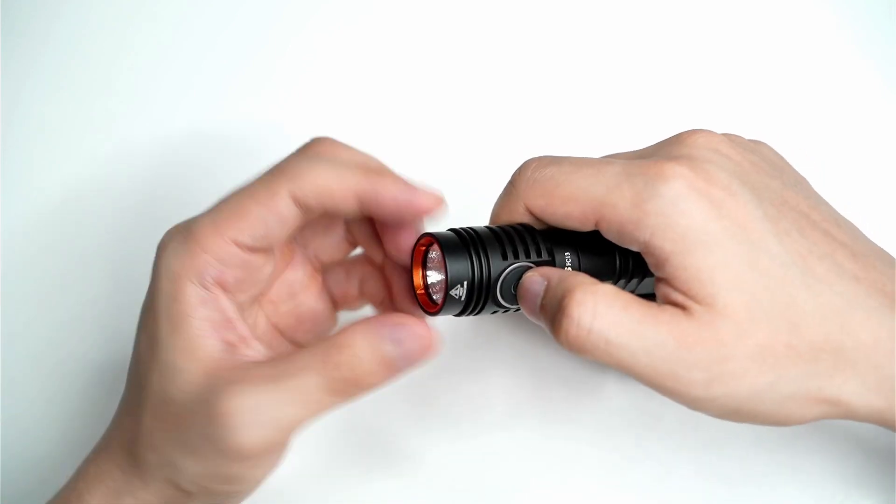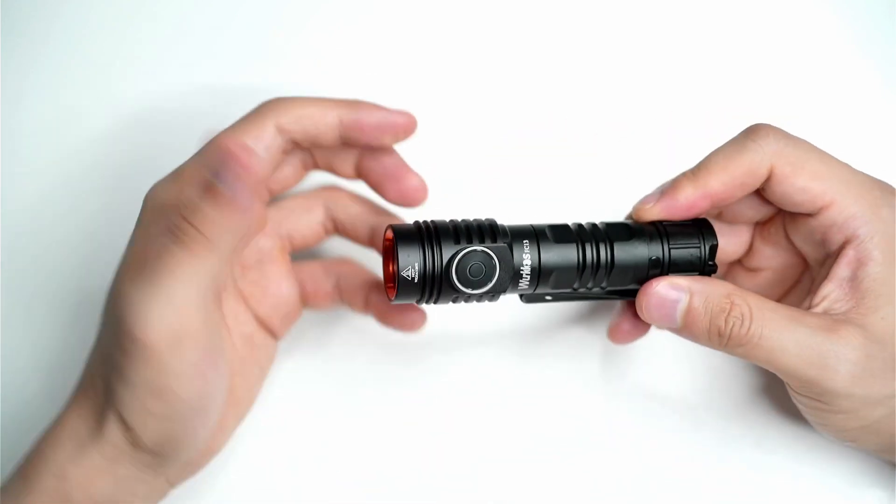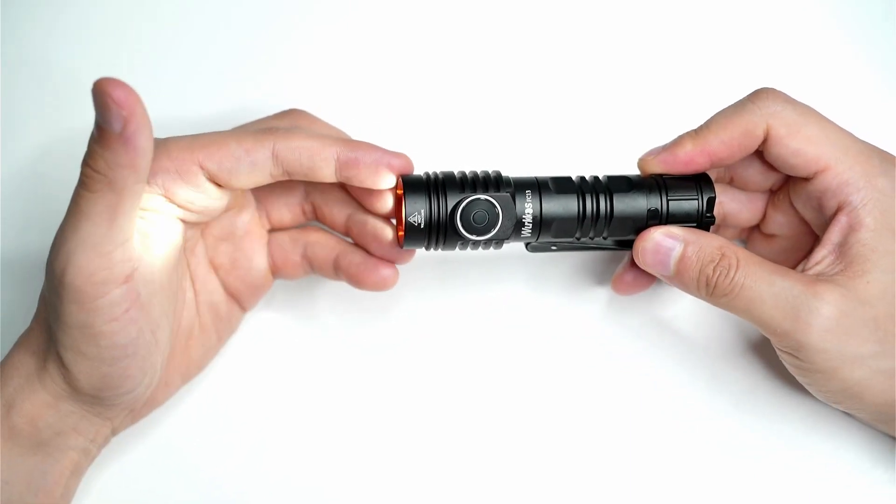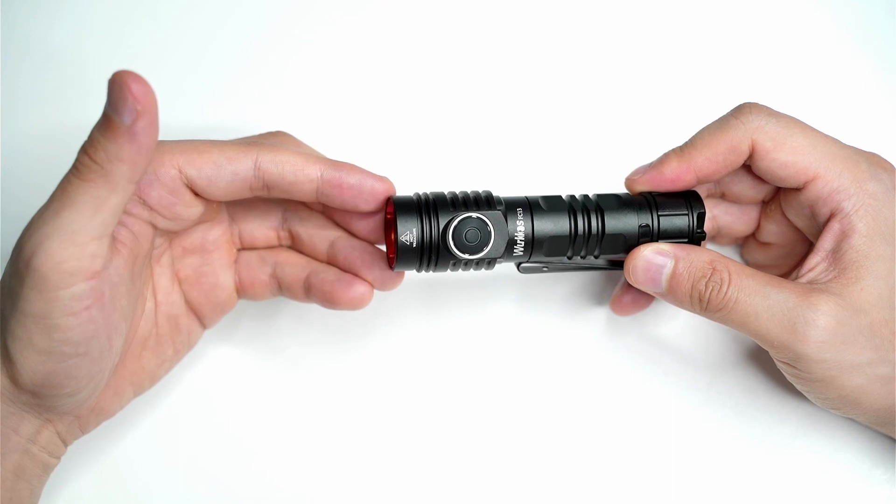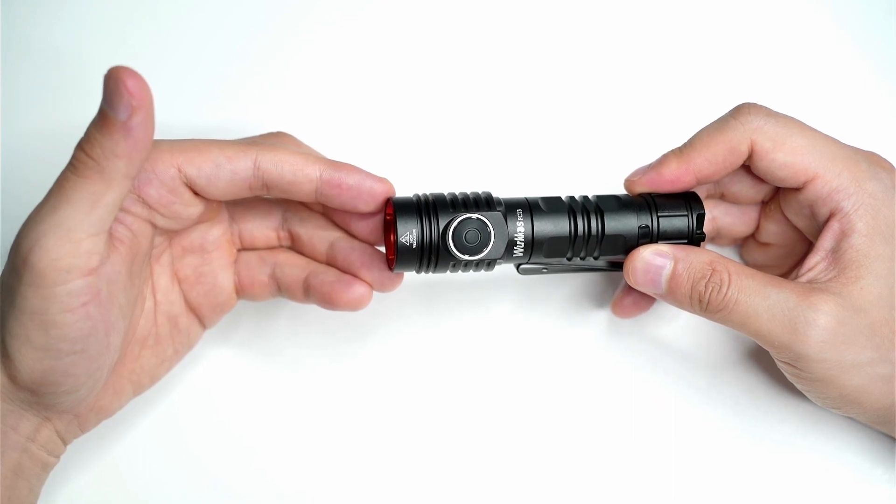Now what you want to do from there is click the button twice: one, two. This will get you into the temperature calibration mode and it actually blinks out the temperature right now. So one, two, three - 32, 32 degrees.